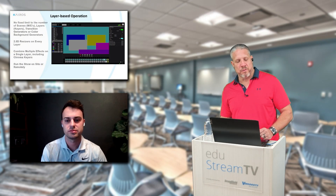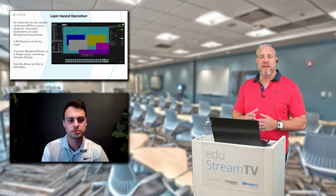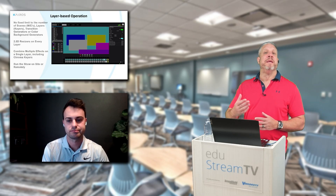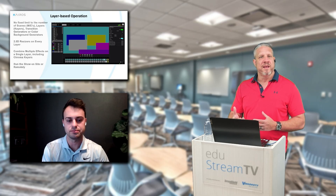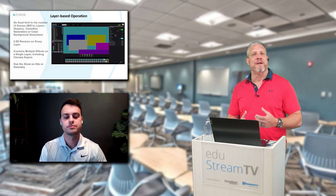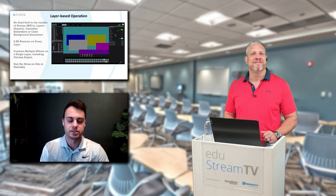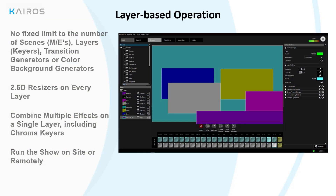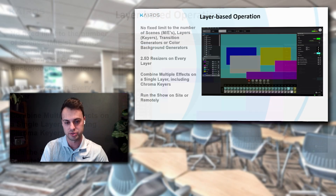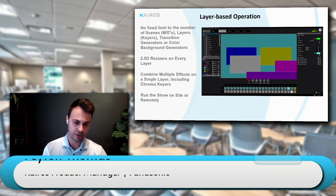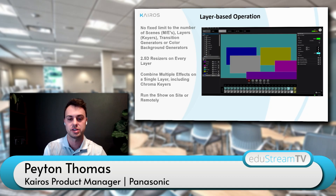That layer-based operation is really a different way of thinking compared to the traditional MEs you'd get in live production — it almost bleeds into how graphic production is done in Photoshop or After Effects. It removes the restriction of a fixed number of MEs or keyers per system. Inside K-Rose, it's virtually unlimited scenes and keyers because it's all about GPU processing. There are no physical MEs or keyers — you can just right-mouse-click, copy and paste another layer, all within one scene.